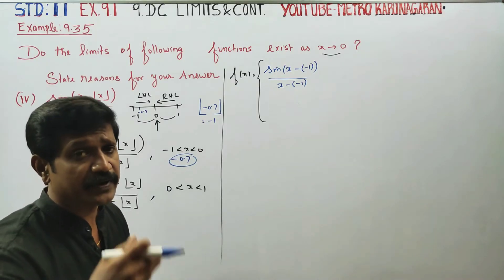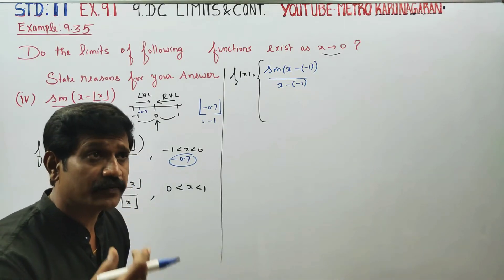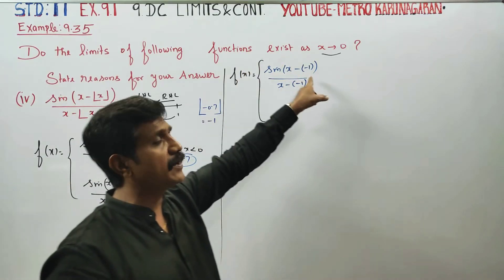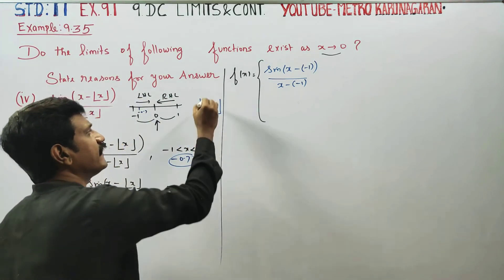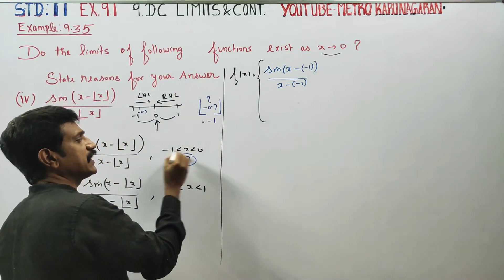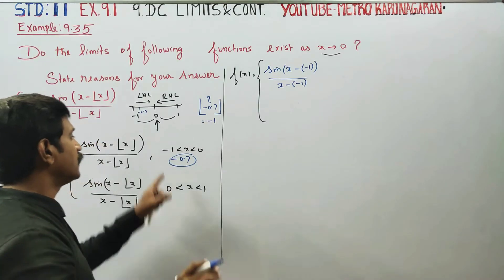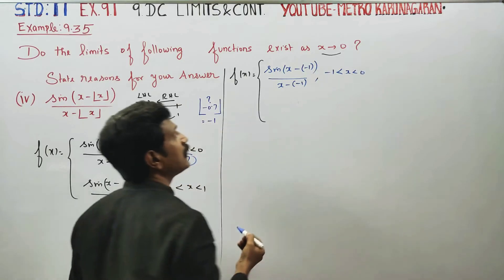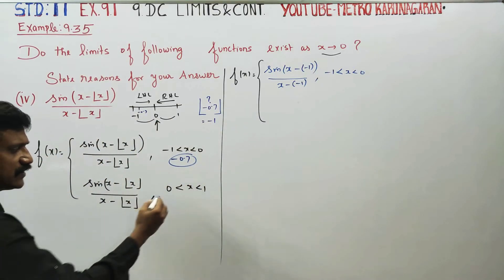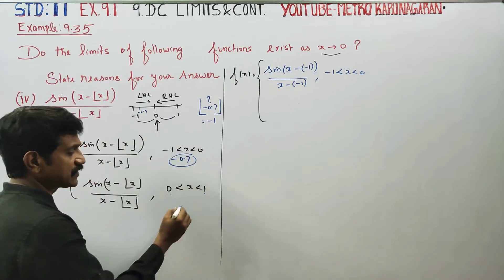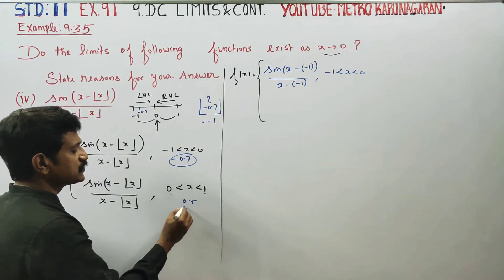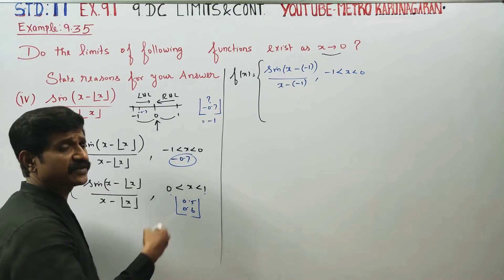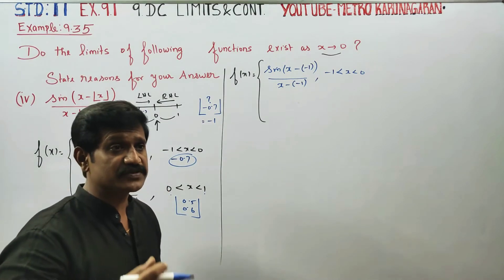For values 0.8, minus 0.9, minus 0.99, minus 0.995. For the interval 0 to 1, for example values like 0.5, 0.6, 0.9.